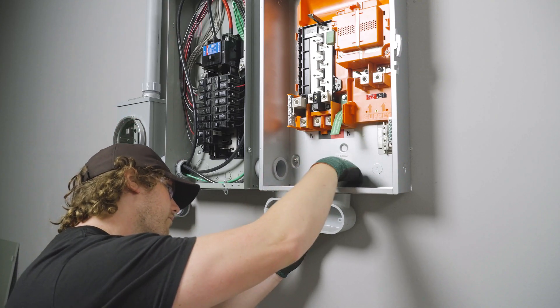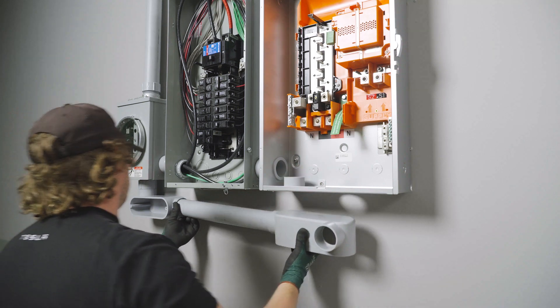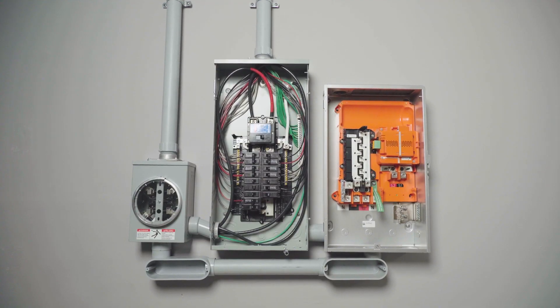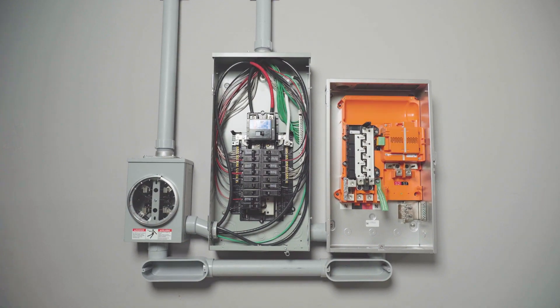With Gateway mounted, install appropriately sized conduit to connect to the incoming power supply, the backup load center, and other Tesla equipment. The next step is to pull wire and make terminations within Gateway.